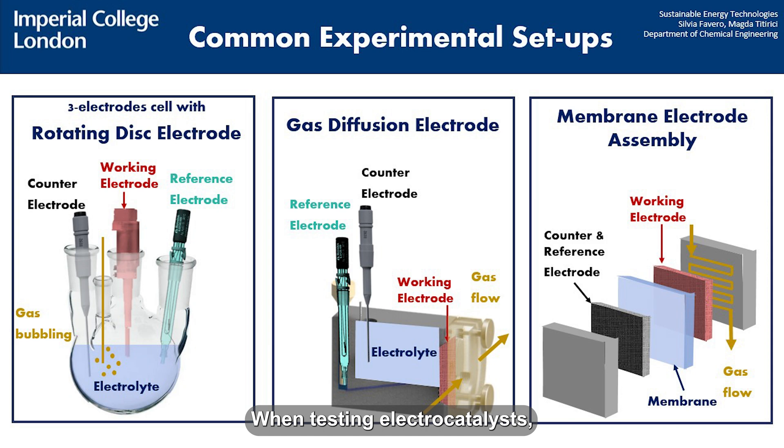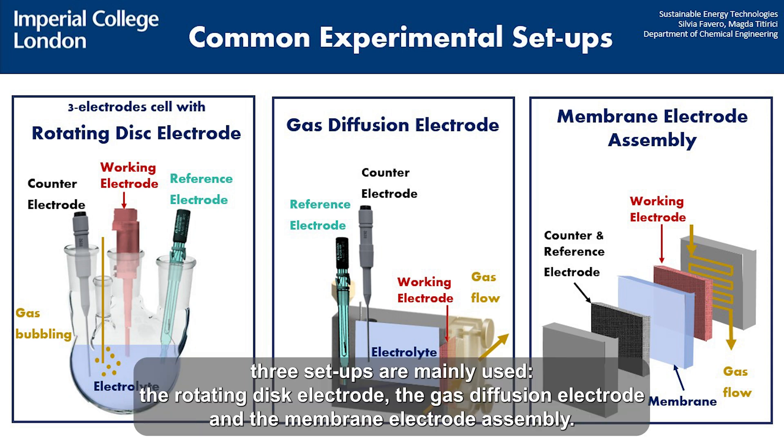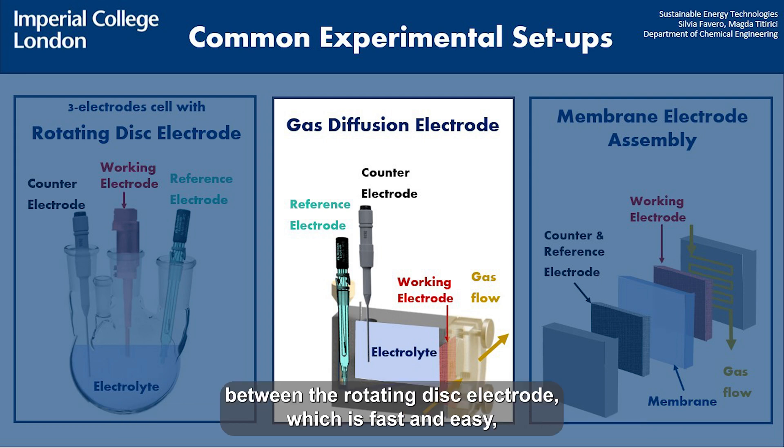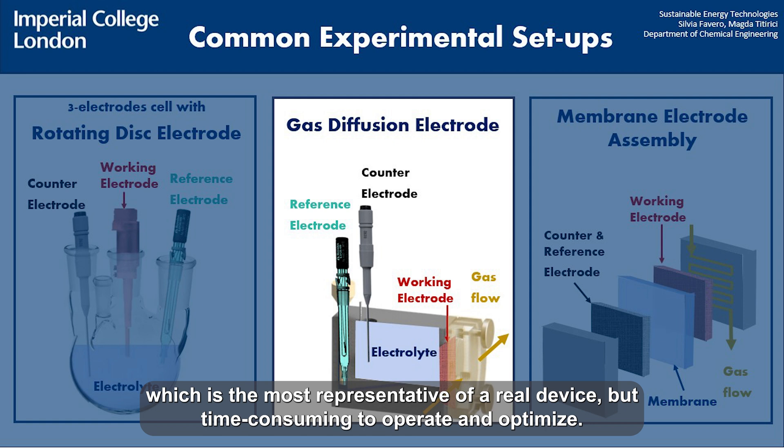When testing electrocatalysts, three setups are mainly used: the rotating disk electrode, the gas diffusion electrode, and the membrane electrode assembly. The gas diffusion electrode is an intermediate testing stage between the rotating disk electrode, which is fast and easy but far from a real device, and a membrane electrode assembly, which is the most representative of a real device but time-consuming to operate and optimize.